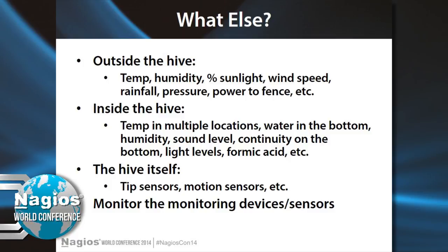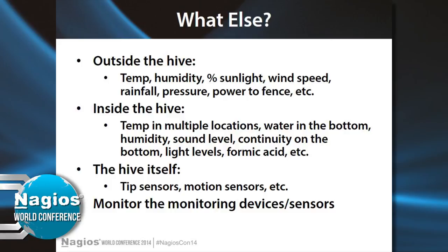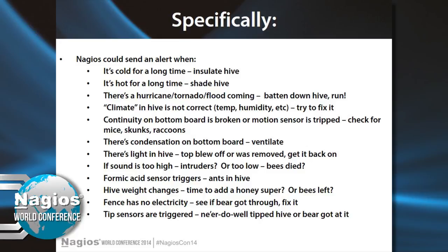What else could I monitor besides weight? Temperature and humidity outside the hive, sunlight, wind speed. Inside the hive: water or condensation, humidity, and sound level — especially in winter, is there sound? Are my bees alive? Whether the hive has tipped over, whether intruders are trying to get in, and of course you'll need to monitor the monitoring devices and sensors themselves. Nagios could alert me to extended cold or heat, an approaching hurricane or flood, mice, skunks, or raccoons, whether the top blew off, or if someone decided to mess with the hive.